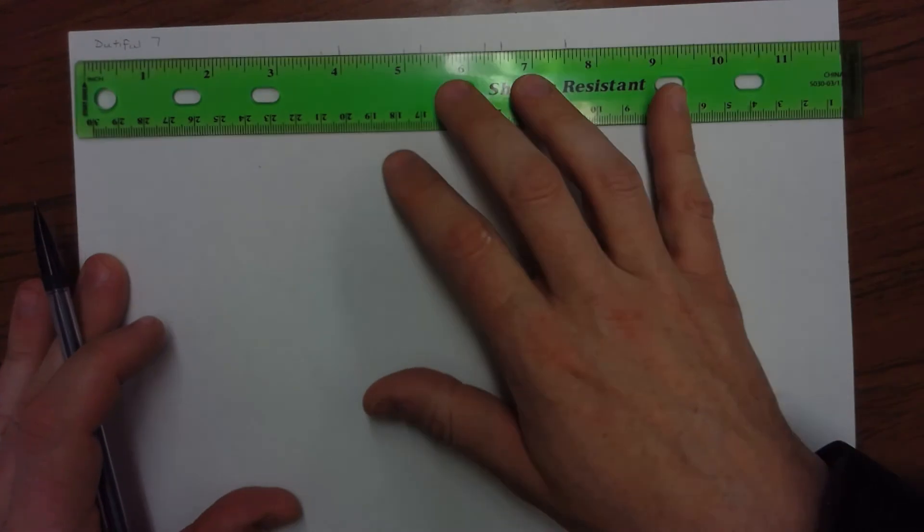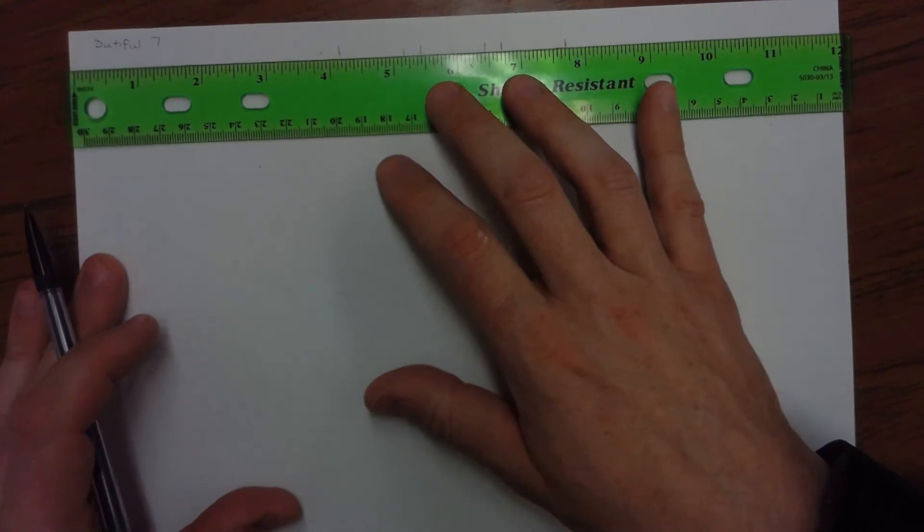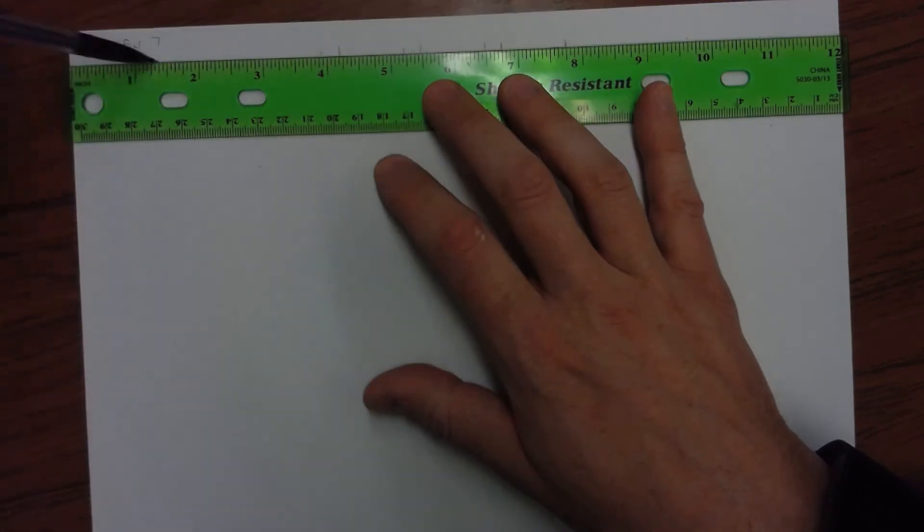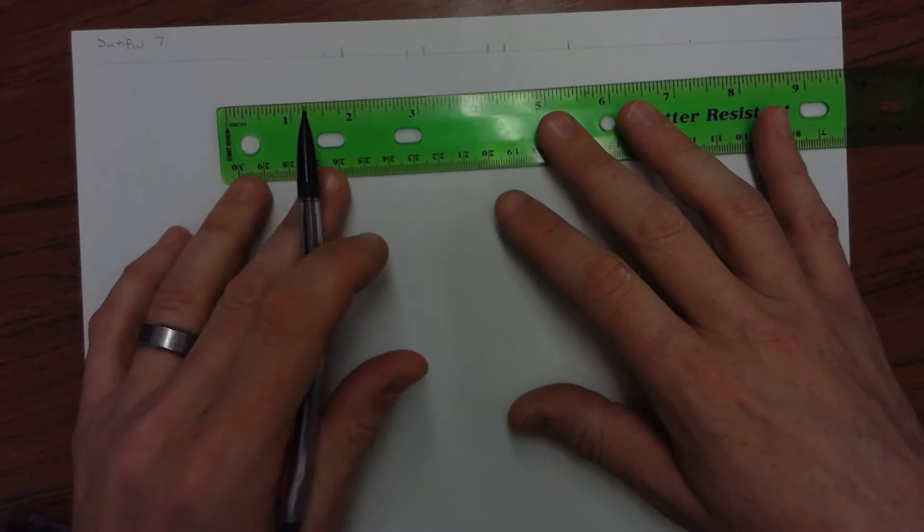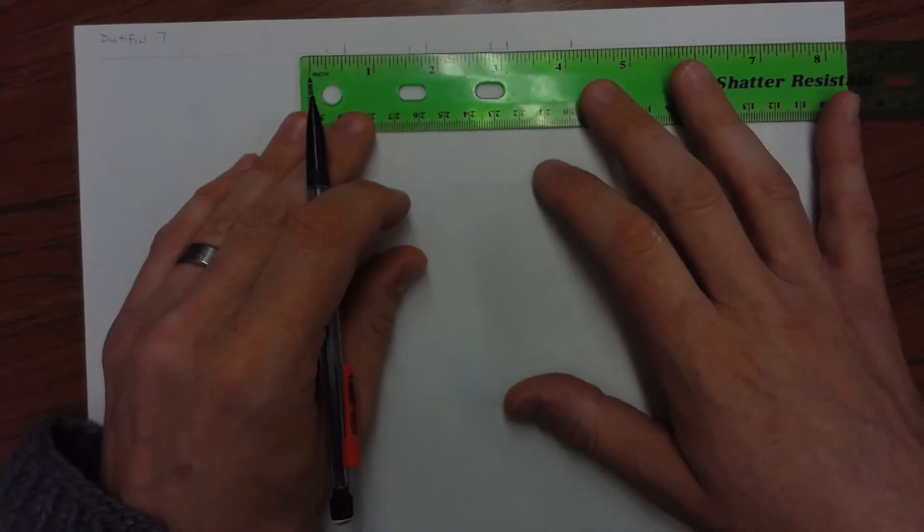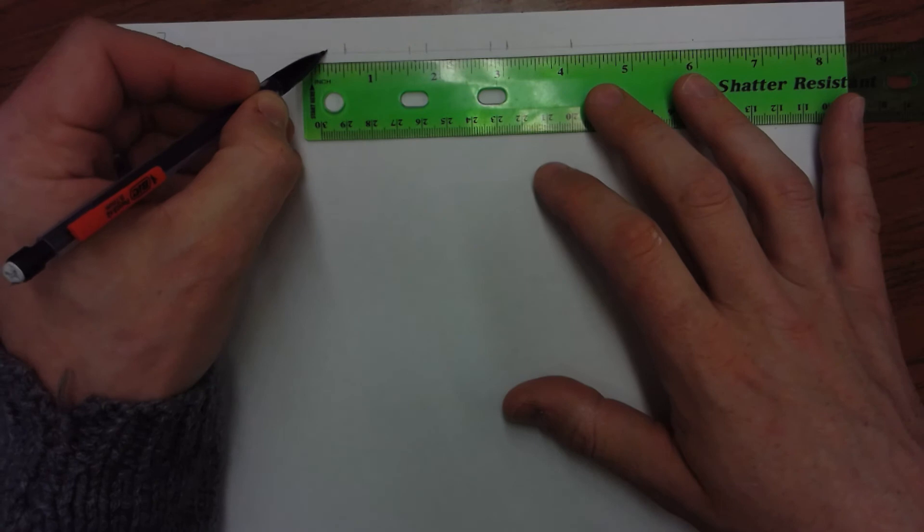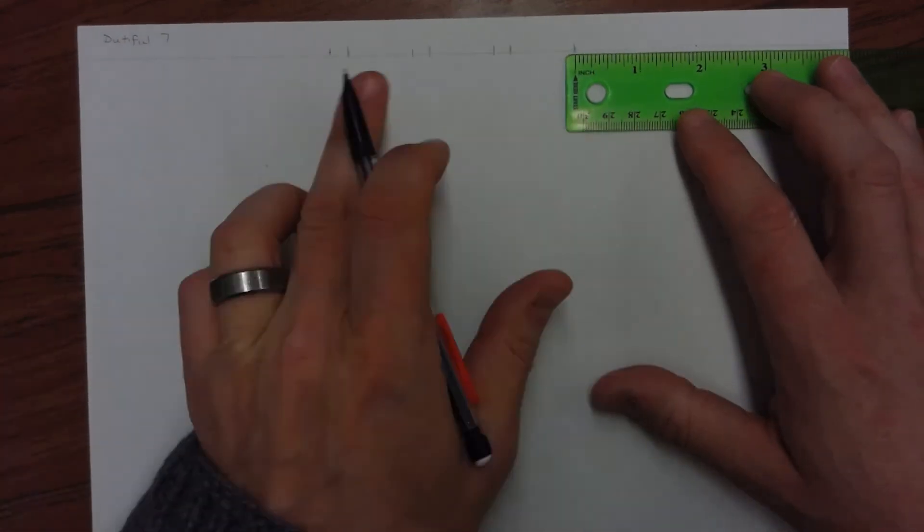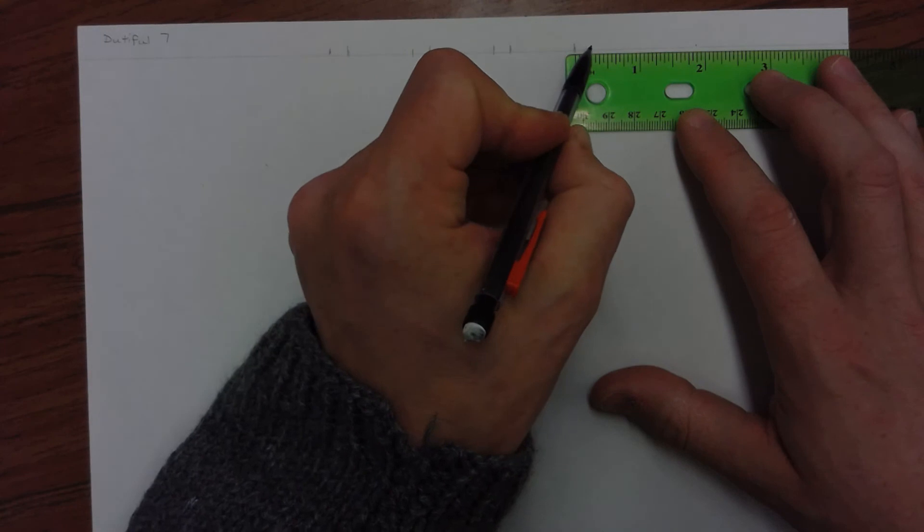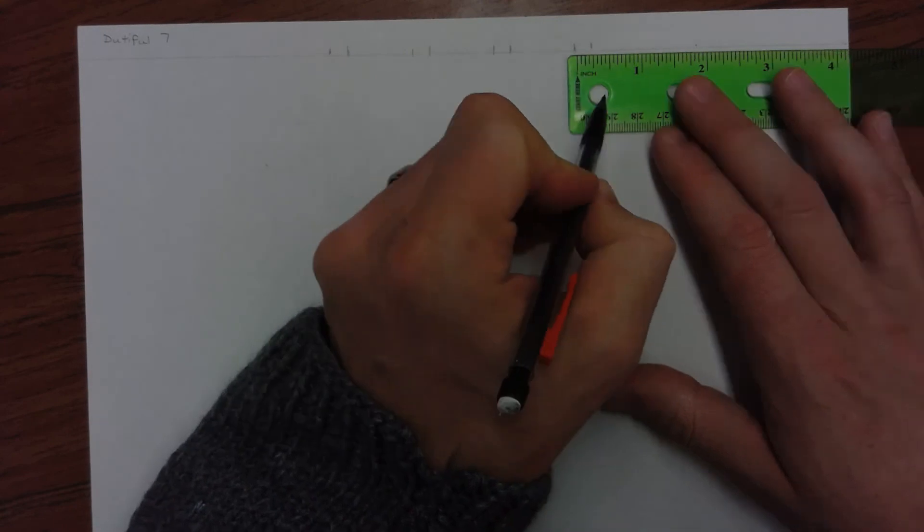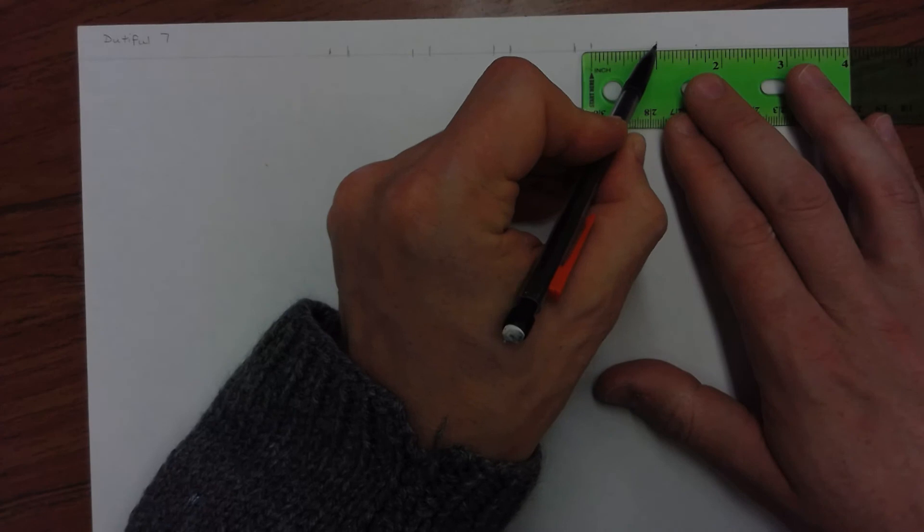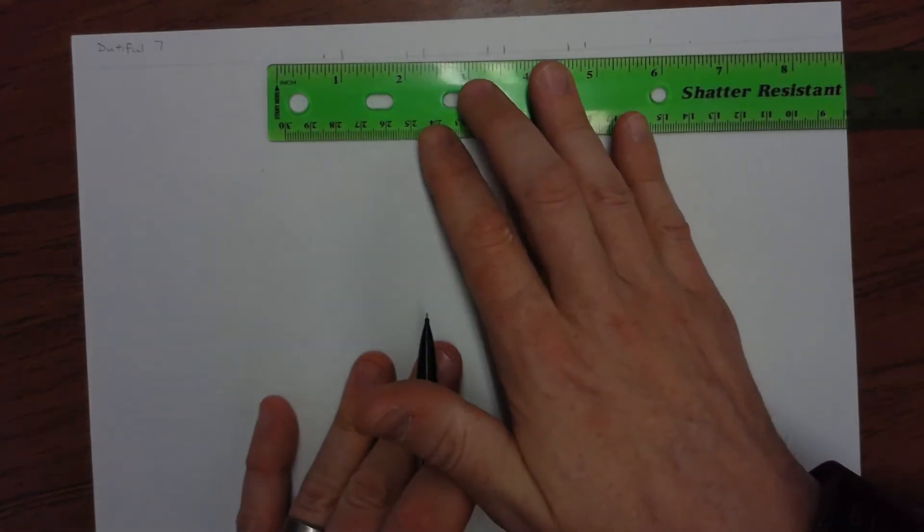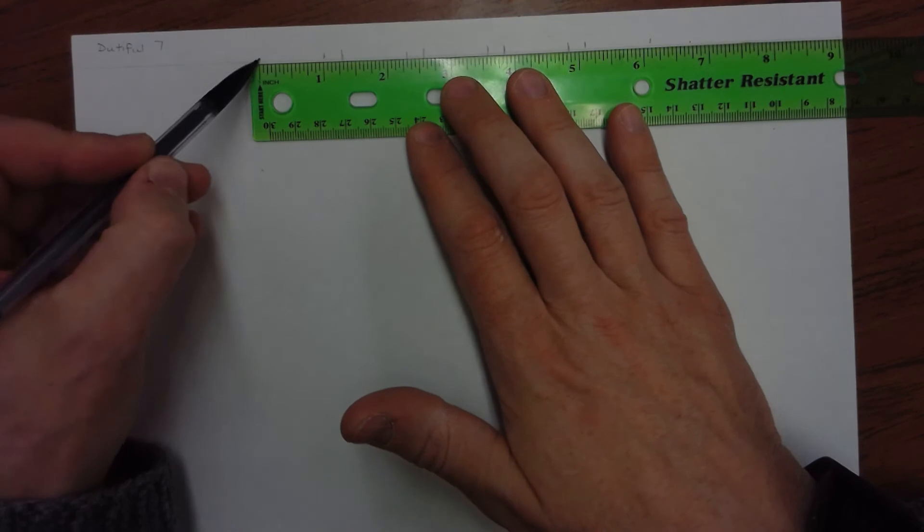I think I'm going to draw myself a line. Something to work on. So a quarter of an inch over there, quarter of an inch here. And then an inch over here. An inch over here.